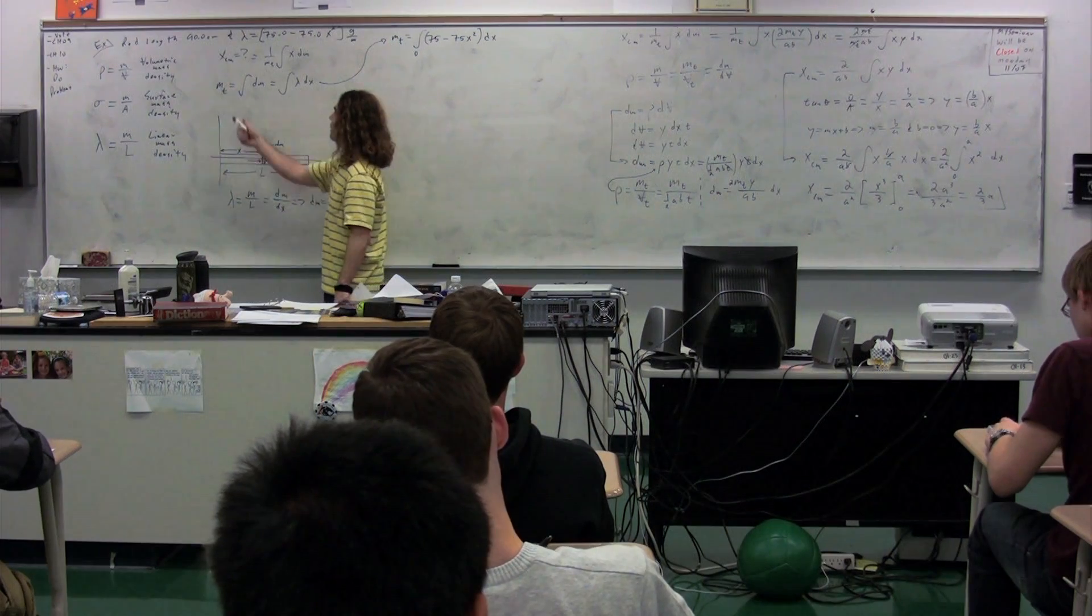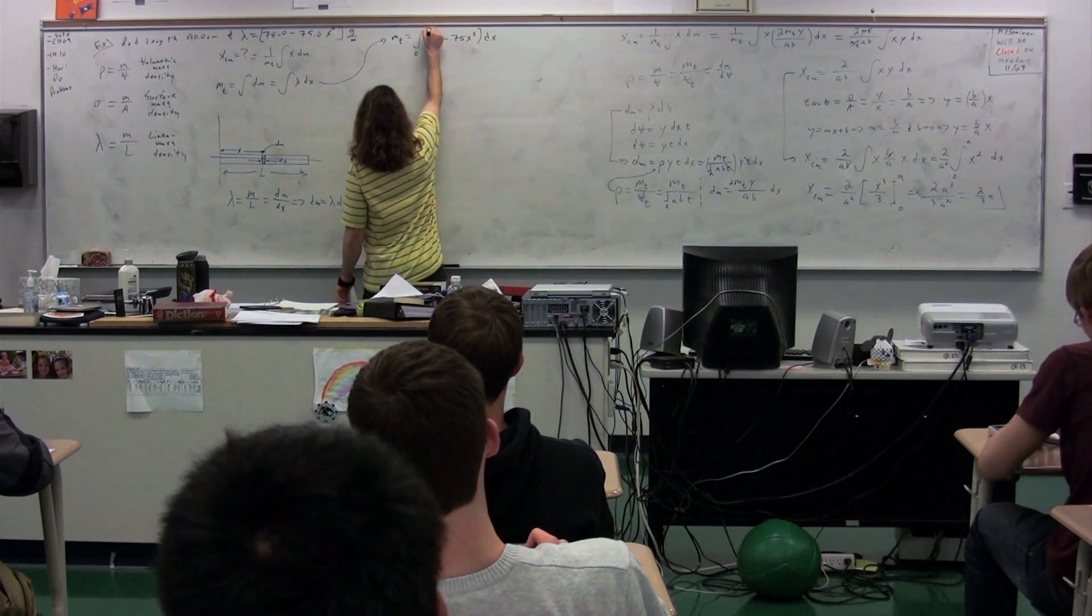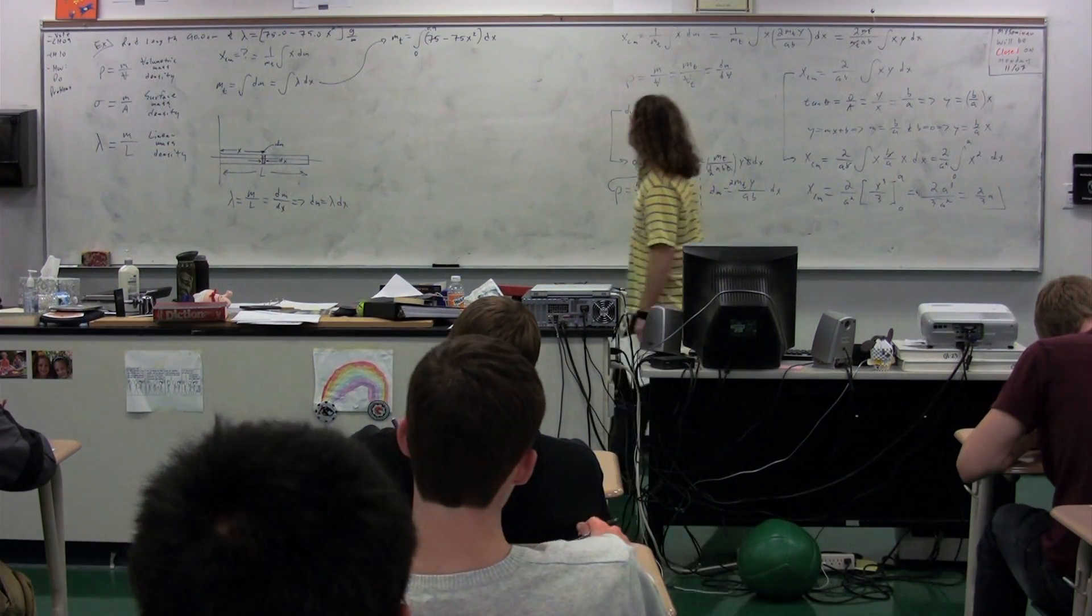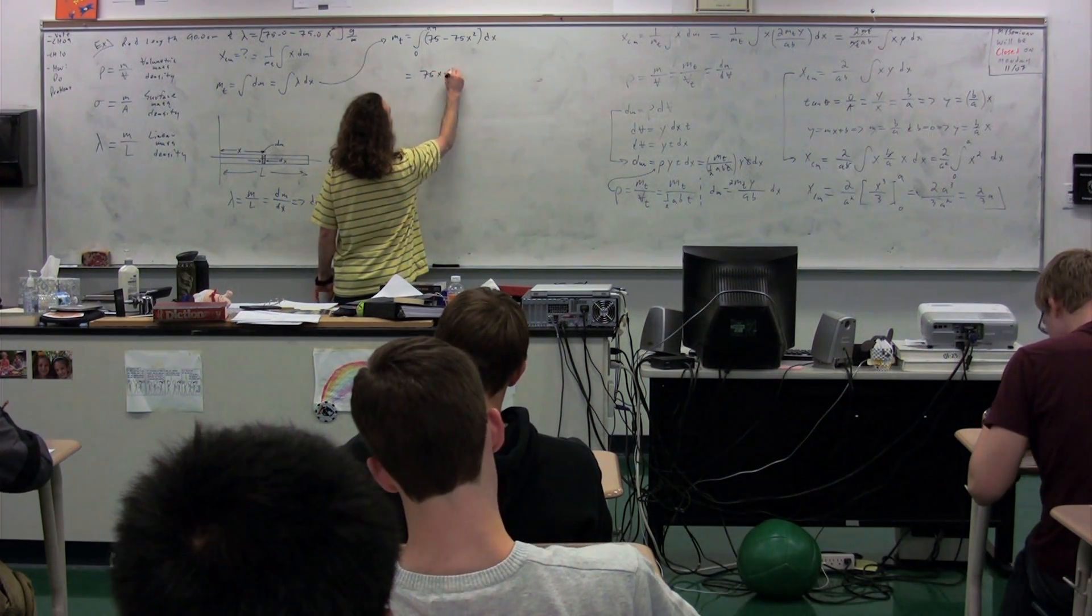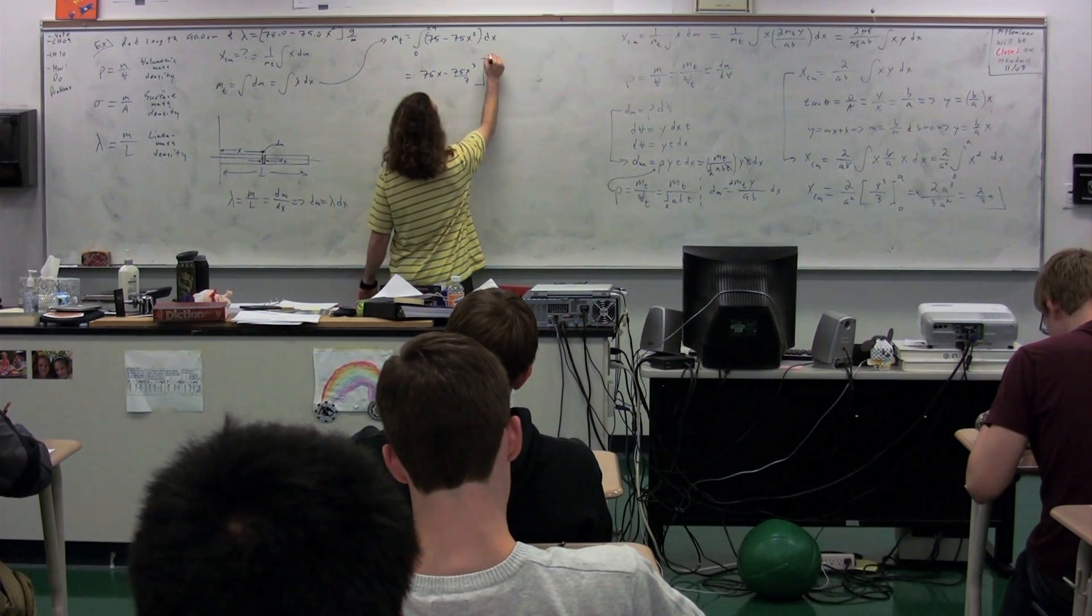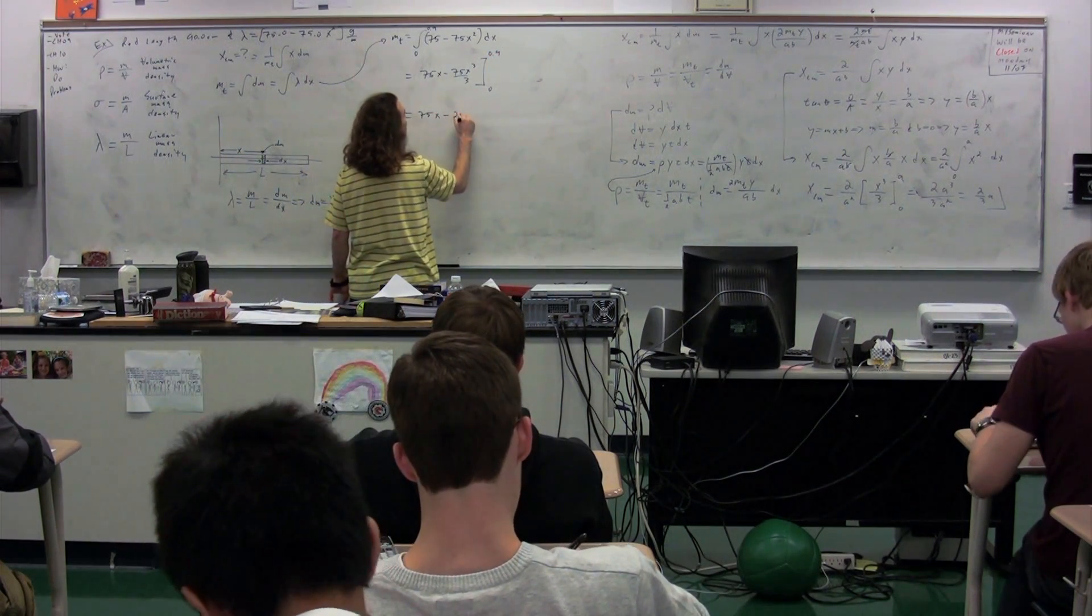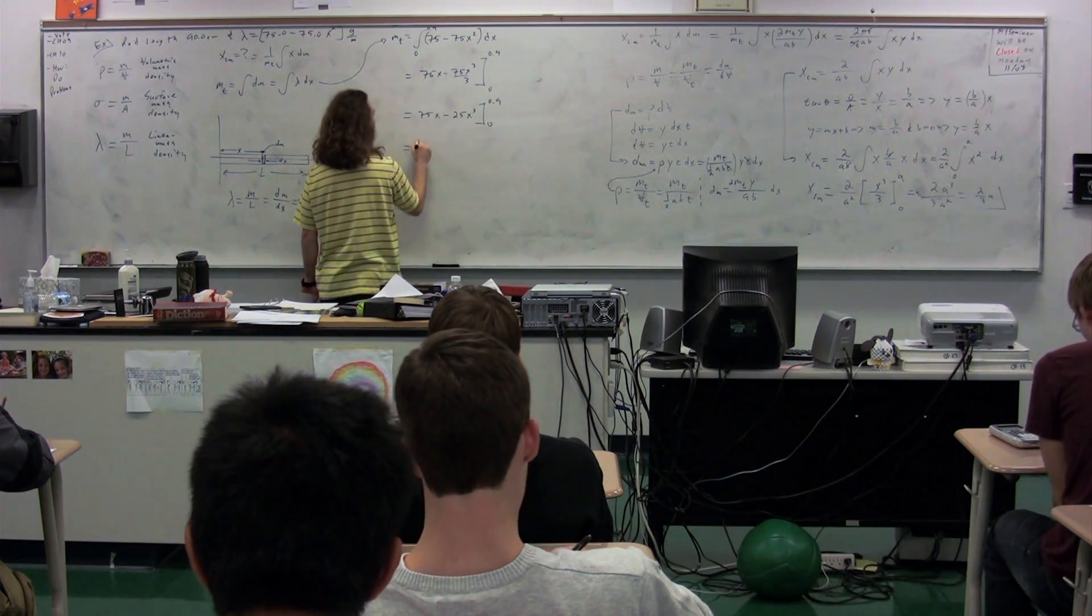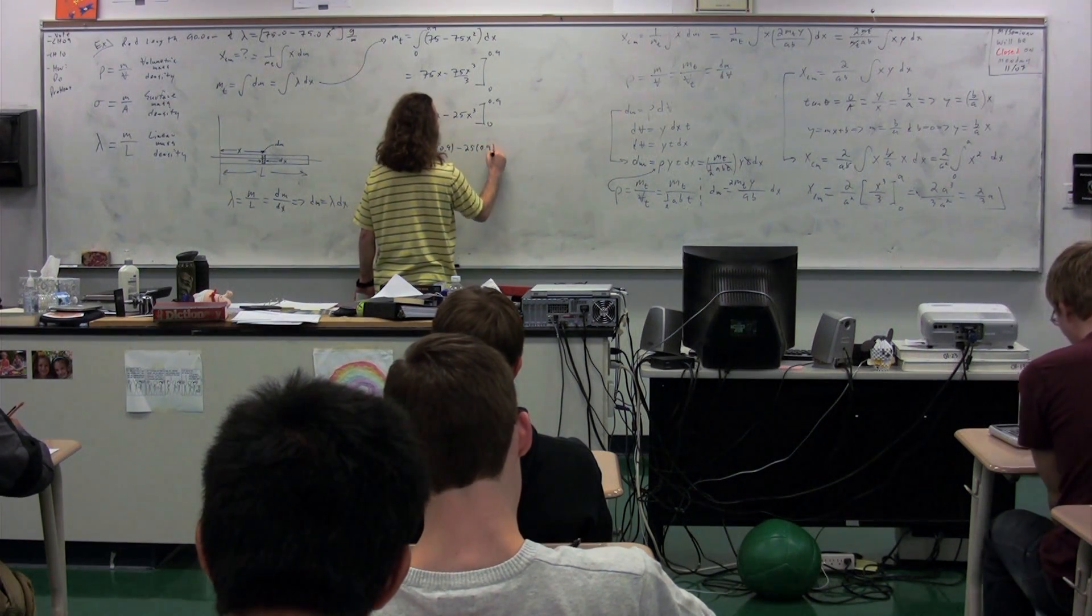Now, in this particular case, we have a value for l, which is 90 centimeters. So, I'm going to do from 0 to 0.9 in terms of meters, right? So, we're going to integrate, I'll give you an integral. So, we have 75x minus 75x cubed divided by 3 from 0 to 0.9. So, 75x minus 25x cubed from 0 to 0.9. So, 75 times 0.9 minus 25 times 0.9 cubed.